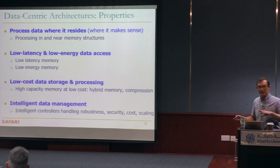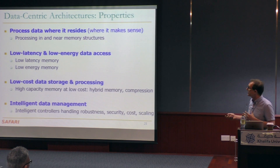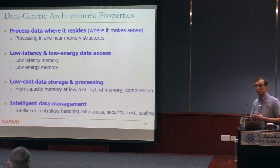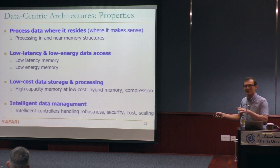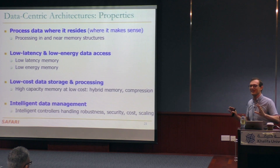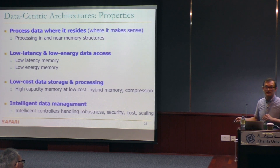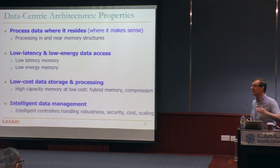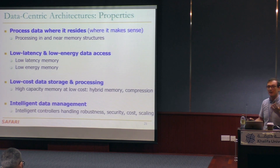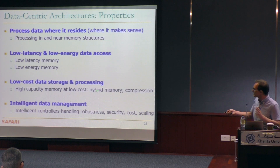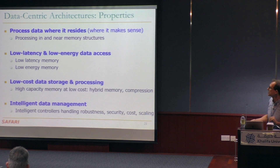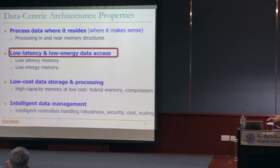The second property is also very important. If data is really important to you and you want to make quick decisions, we really need to enable low latency and low energy access to data. If you don't do that, you'll spend lots of time waiting for data. Latency is the cause of a lot of problems we have in systems today. High latency actually leads to high energy as well. We also want low-cost data storage and processing, and we want to manage data intelligently.